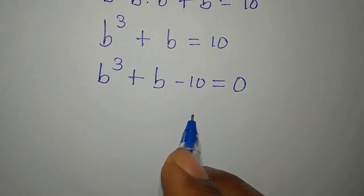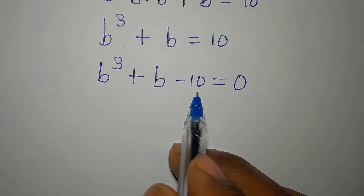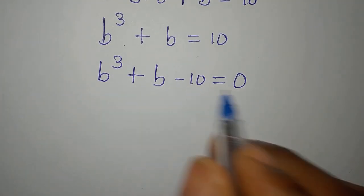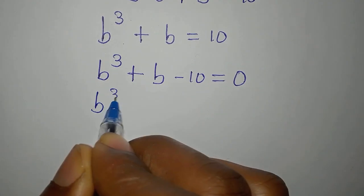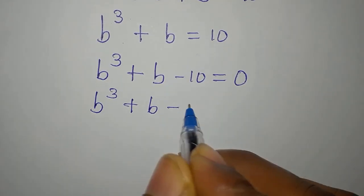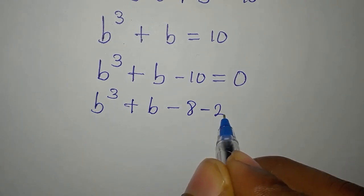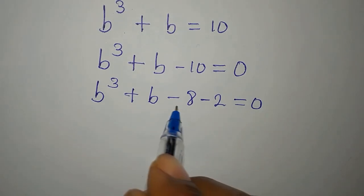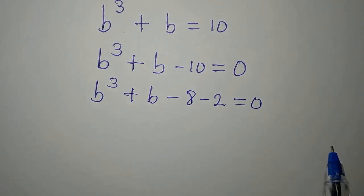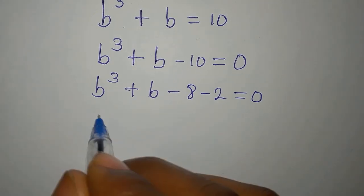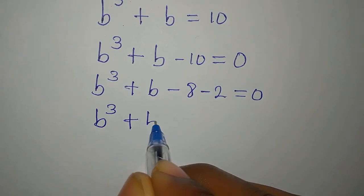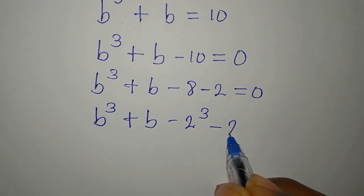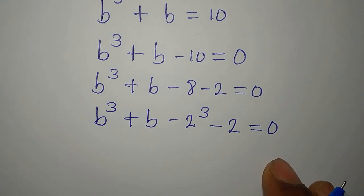Now let's break this up so we can factorize easily. We write 10 as 8 plus 2, giving us B to the power of 3 plus B minus 8 minus 2 equals 0. Notice that minus 8 minus 2 sums to minus 10. We can rewrite this as B to the power of 3 plus B minus 2 to the power of 3 minus 2 equals 0.